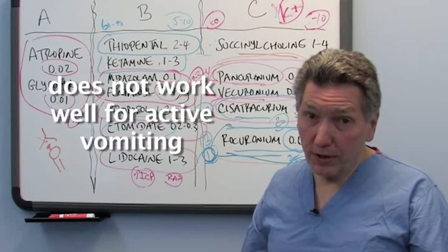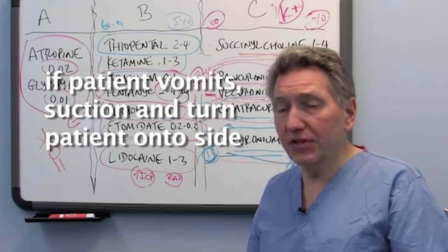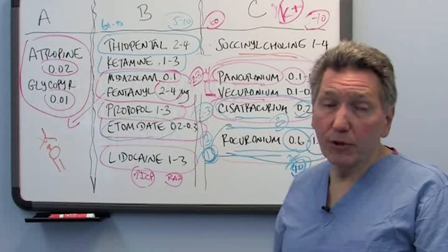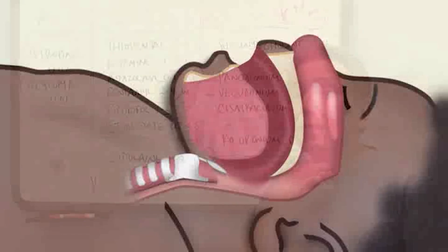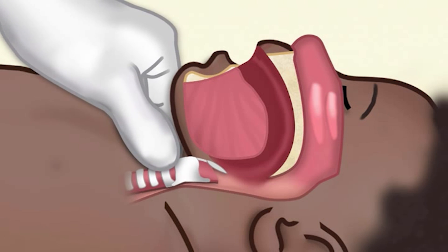It doesn't really work well for active vomiting. So if the patient starts to vomit, then suction and turn on the side and deal with that situation. But most of the time you can prevent passive regurgitation just, again, pressure on the cricoid, pushes the trachea back onto the esophagus and creates a block against the regurgitation.